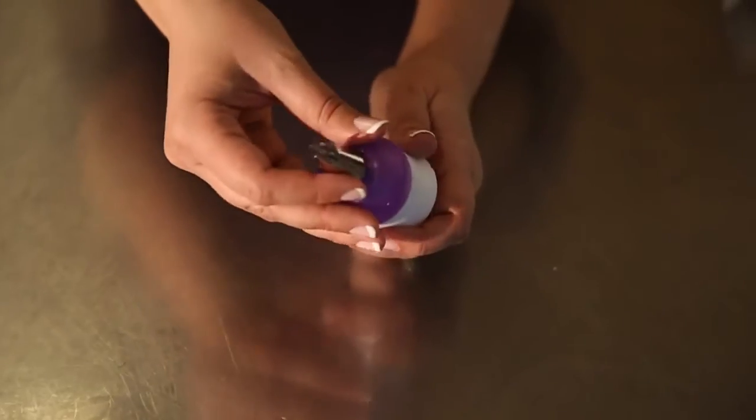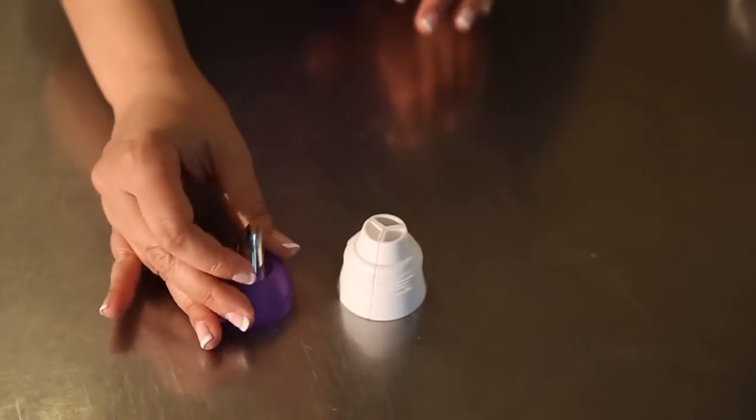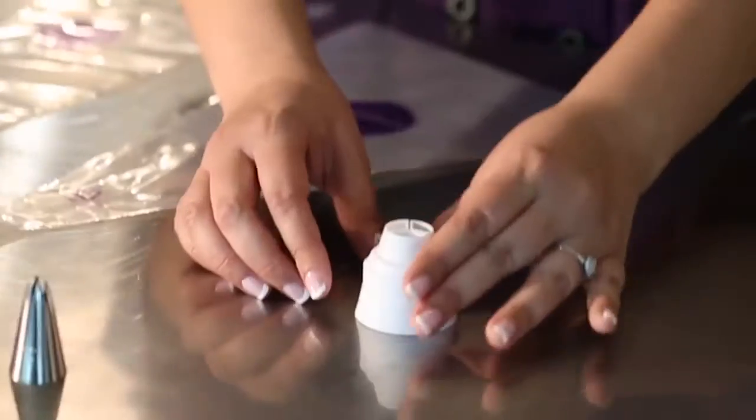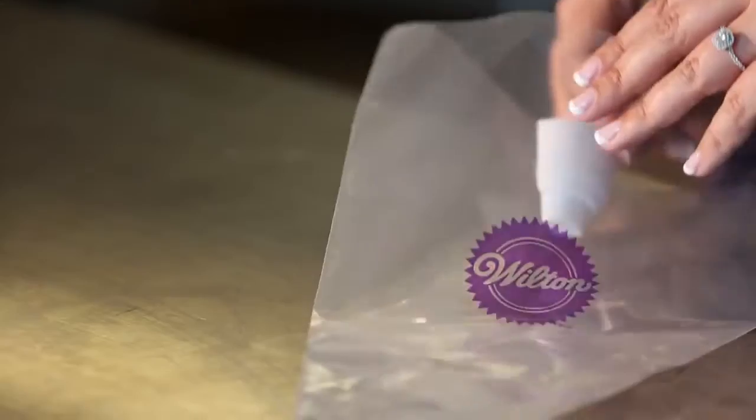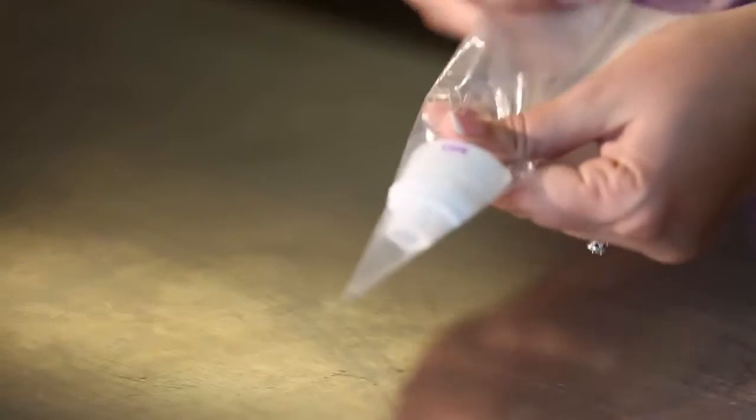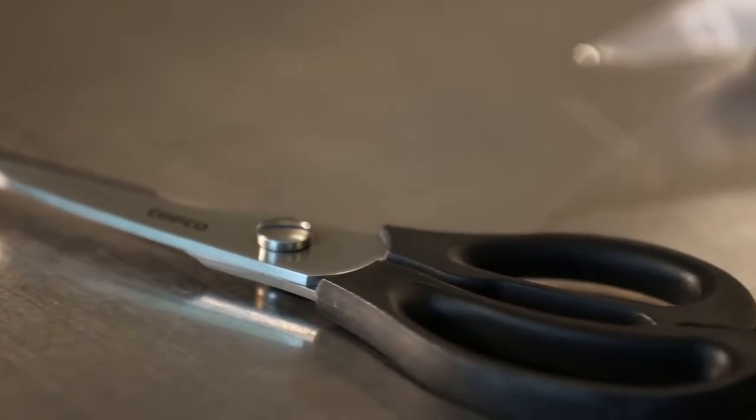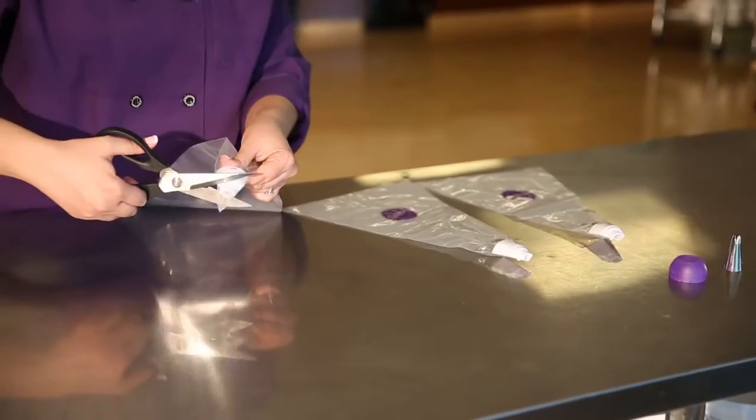Wilton's Tri-Color Coupler comes with three interlocking couplers and a coupler ring. Take three 16-inch decorating bags and fit each with one of the interlocking couplers. Score and cut the bag for the coupler.